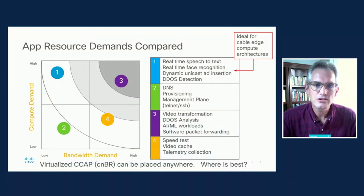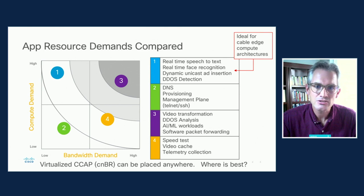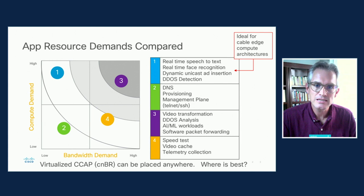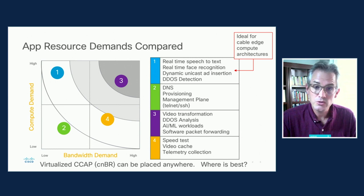Some of the applications that are really going to matter for low-latency, high-bandwidth compute, or even low-latency, low-bandwidth compute, are real-time services such as speech-to-text and real-time face recognition. There's some very interesting bespoke ad insertion technology for subscribers that would benefit from low latency. Just today there was a report from Gartner saying secure access service edge will benefit from a low-latency edge compute strategy. So there will be a market for computational resources that can reach many subscribers quickly.